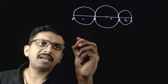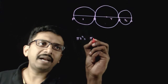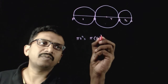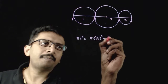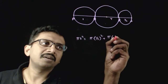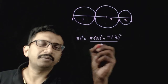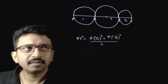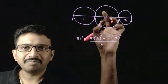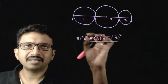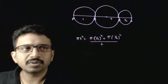So, pi r squared equals pi times (1/2) squared — the radius is half — plus pi times (1/4) squared, all divided by 2. The area of the middle circle is the average of the areas of the other two circles.